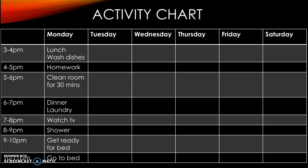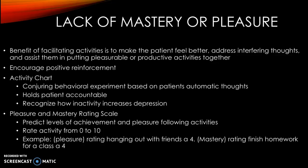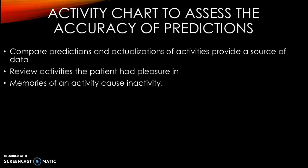The patient will see if their mood has changed due to their activities. By using the pleasure and mastery scale, it is used to predict levels of achievement and pleasure following activities. Each activity the patient does, they will rate it on a scale from 0 to 10. When depression interferes with recognizing pleasurable thoughts, the patient will begin to recognize that they can change their mood by rating their activities every day. By comparing the patient's predictions and actualizations of activities, it provides a source of data, because the therapist can see which activities the patient has more pleasure in or a sense of achievement.